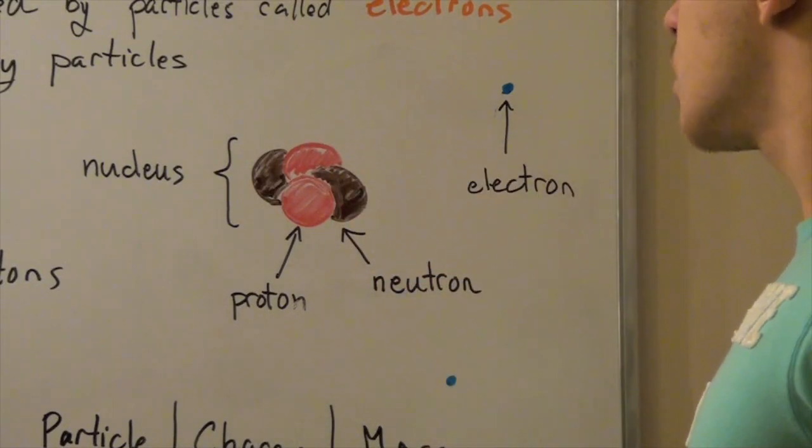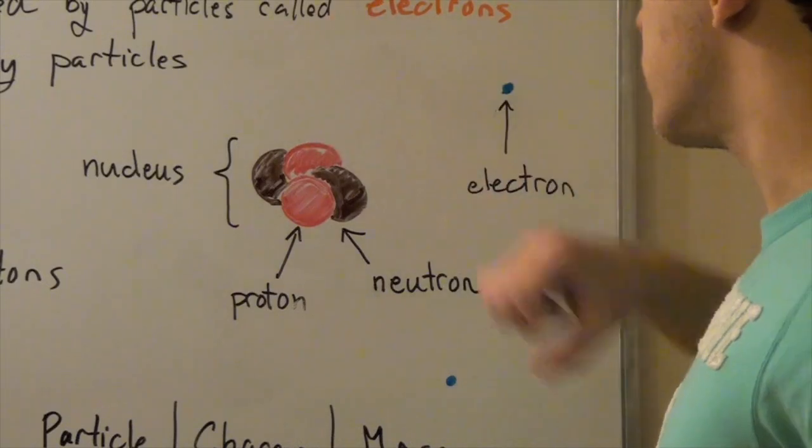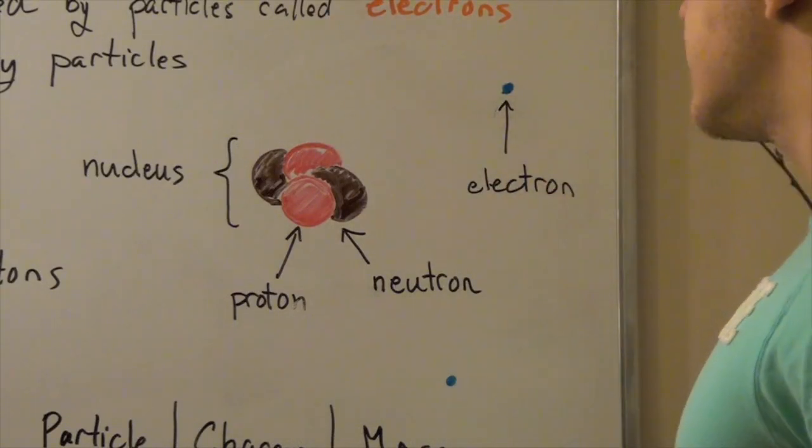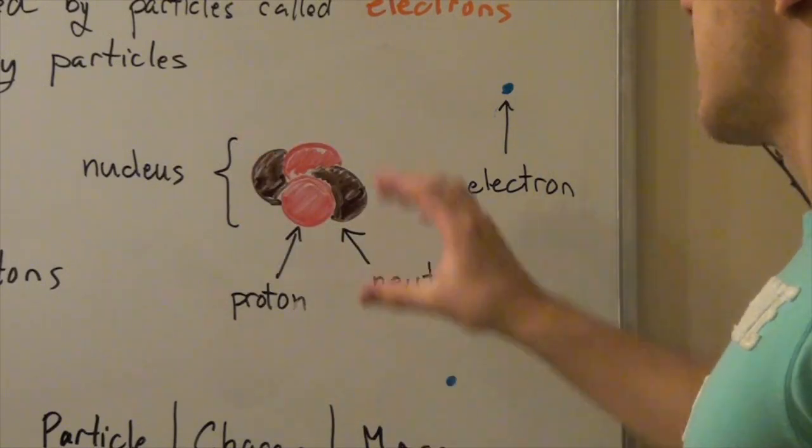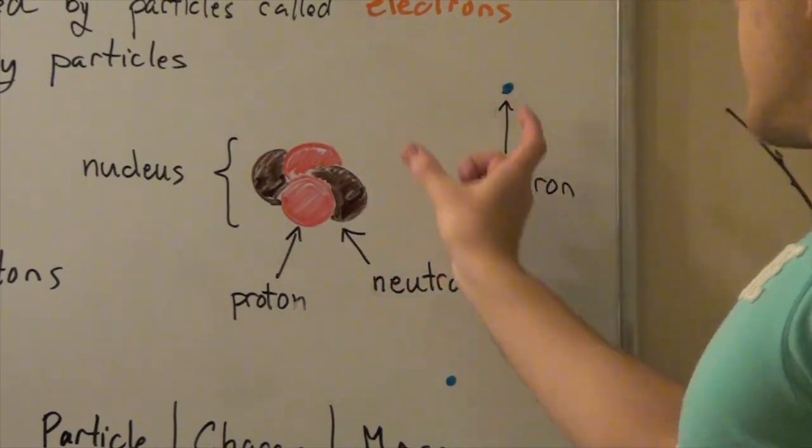The protons are positively charged, while the neutrons are neutrally charged. Now the electron is found orbiting our atom, our nucleus. And the distance between our nucleus and the electron is quite large.